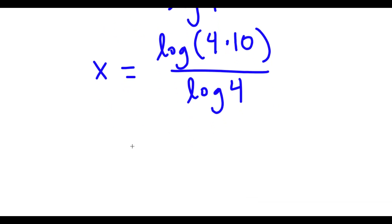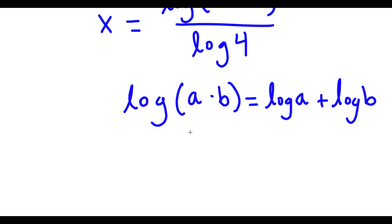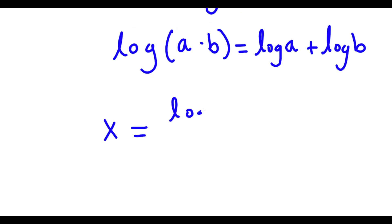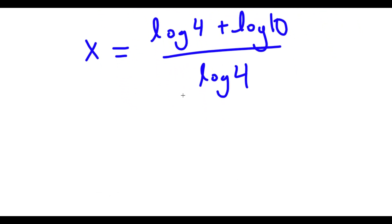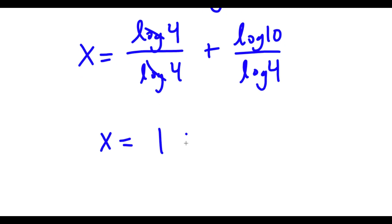Now log 40 is the same thing as log of 4 times 10, and now if I have something in the form log a times b, this is equal to log a plus log b. So in this case I have log 4 times 10, which is log 4 plus log 10, all over log 4. Now log 4 plus log 10 over log 4 is the same thing as log 4 over log 4 plus log 10 over log 4. And log 4 over log 4 cancels out, so now I have x is equal to 1 plus log 10 over log 4.